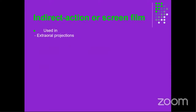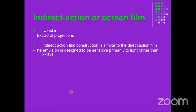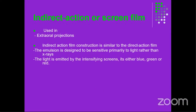Indirect action or screen films are used for extraoral projections. The construction of the indirect action film is similar to the direct action film, but its emulsion is designed to be sensitive primarily to light rather than to X-rays. While direct action film emulsions are sensitive to X-rays, these indirect action film emulsions are sensitive to light emitted by the intensifying screens, which can emit blue, green, or red light.